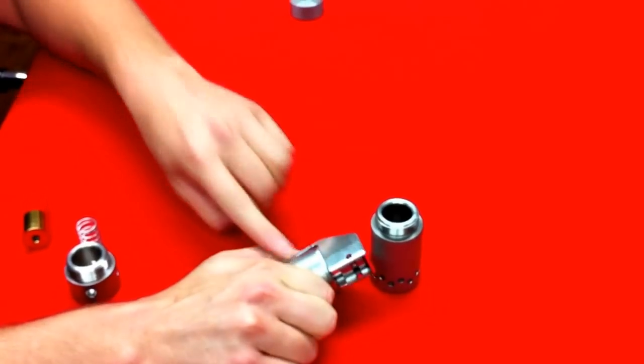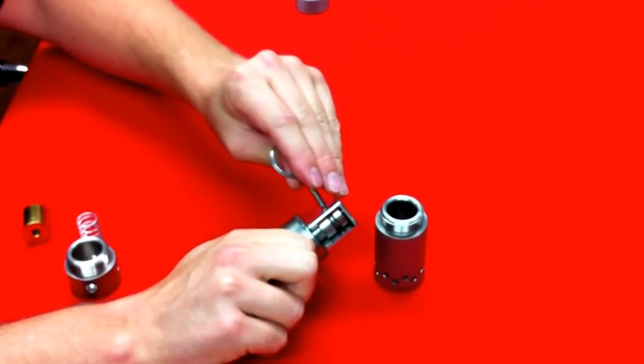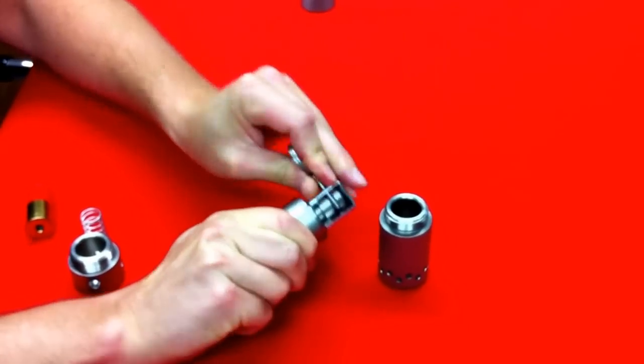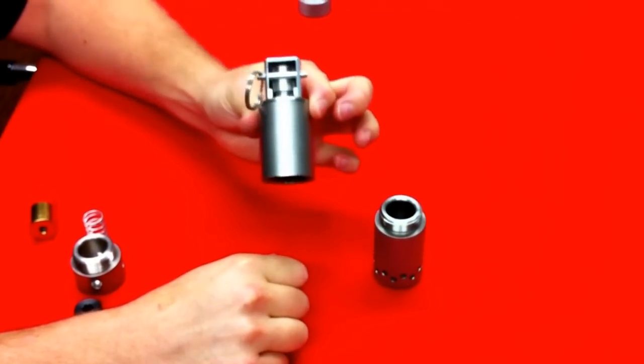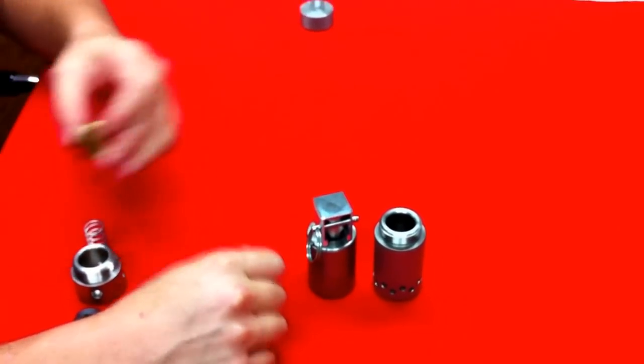Once you lock that in, take your thumb, hold the tab back and run your cross pin block through it. Now you have a safety portion of your flashbang grenade.